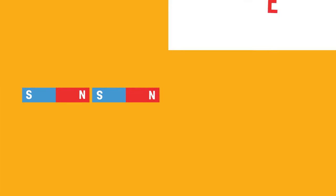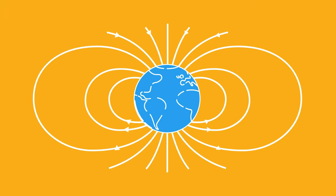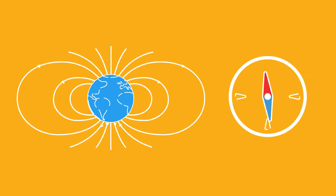Perhaps you've played with bar magnets or have a magnet on your fridge, but did you know that the Earth is a giant magnet? In fact, this is how compasses work.